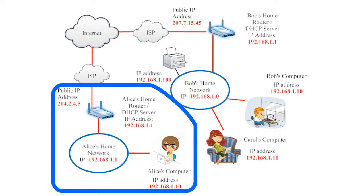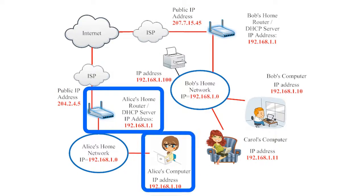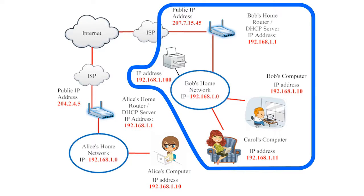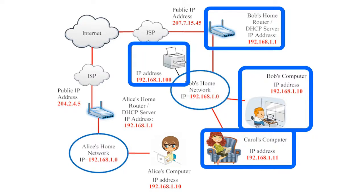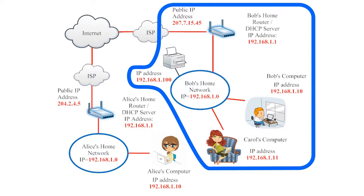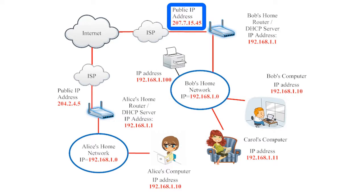This illustration shows two different networks connected to the internet: Alice's home network and Bob's home network. Alice's home network is composed of two devices — a router and Alice's computer. Bob's home network is composed of four devices — a router, Bob's computer, Carol's computer, and a printer. Bob's local internet service provider has only assigned him one IP address, but he would like to connect two computers and a printer to the internet.